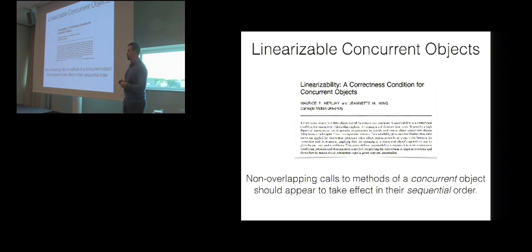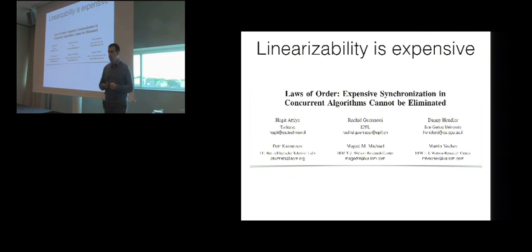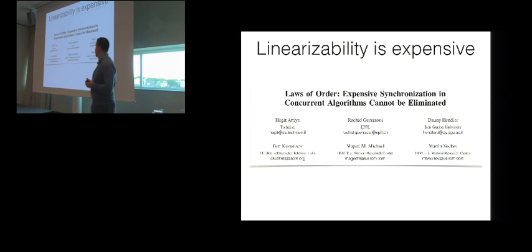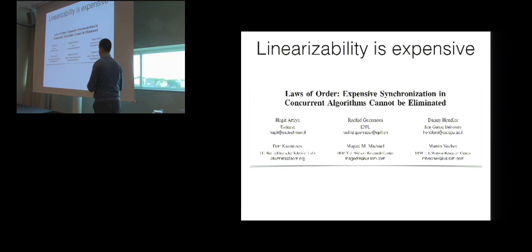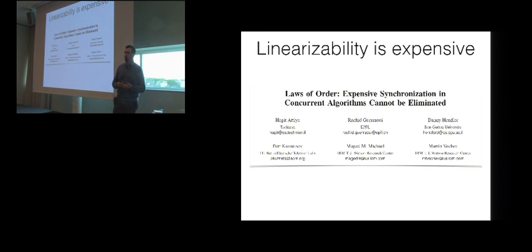So far, so good. Unfortunately, linearizability comes with an issue, and this is a performance issue. This is a fairly recent result from 2010, saying that if we want to implement a correct linearizable concurrent object, we unavoidably need to rely on some expensive synchronization primitives, such as compare-and-swap. And this is the reason why we cannot really take full advantage of parallelism.